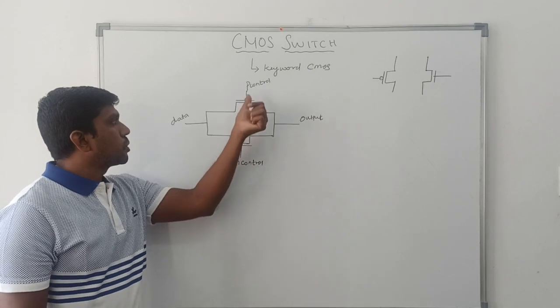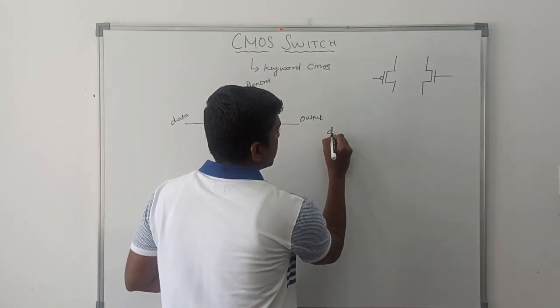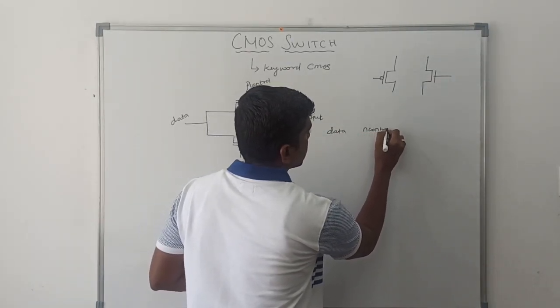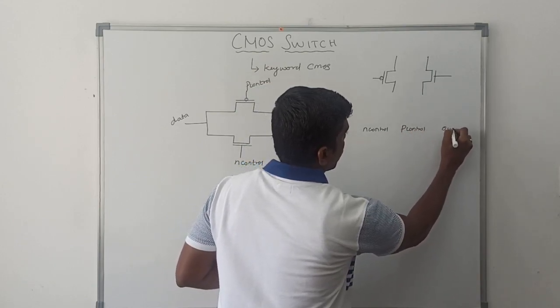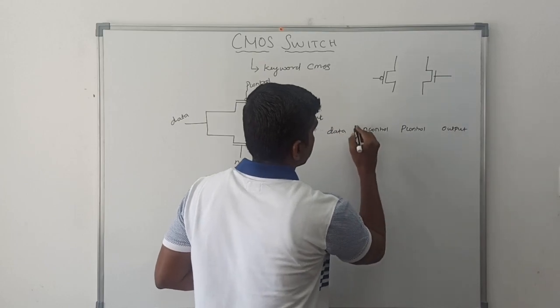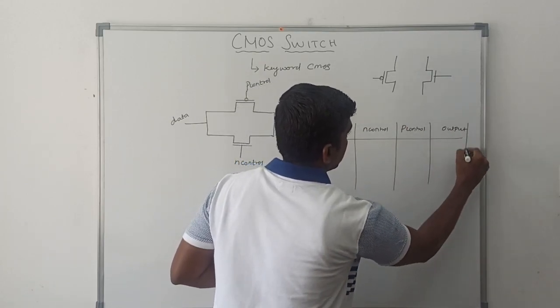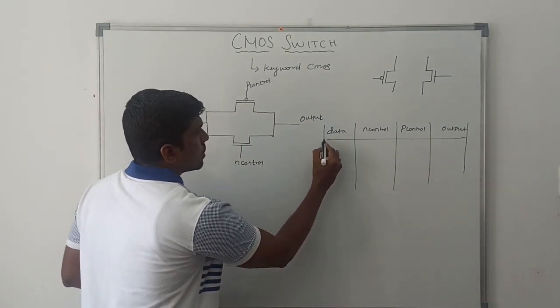Based on the control signal, the data is connected to output. Here: data, N control, P control, and output. Using this table, I'll explain the diagram.